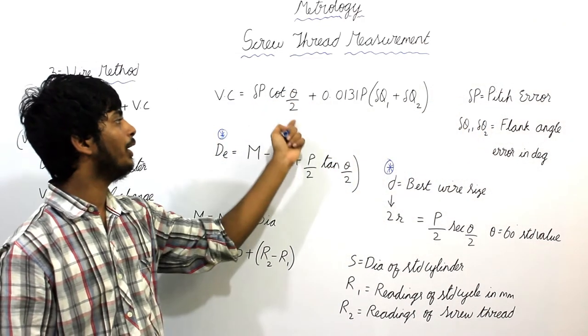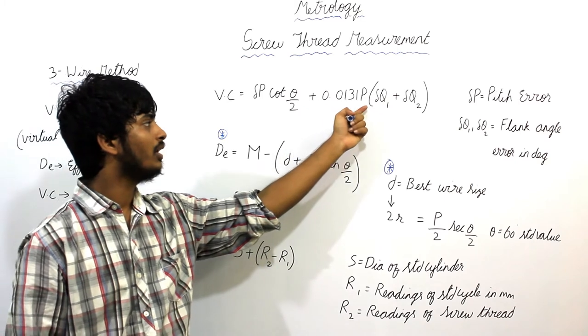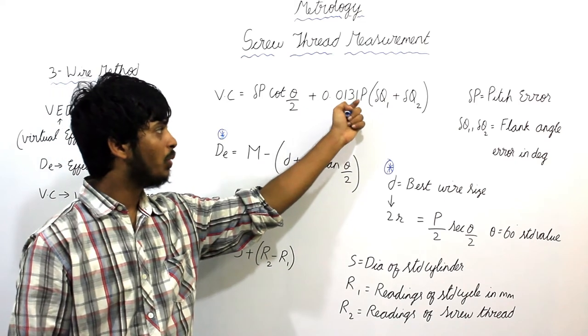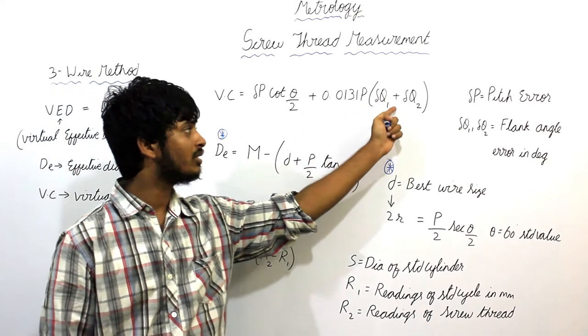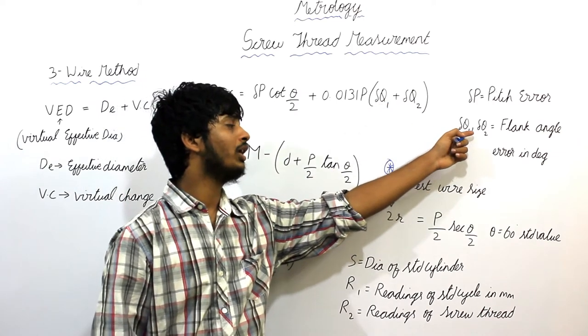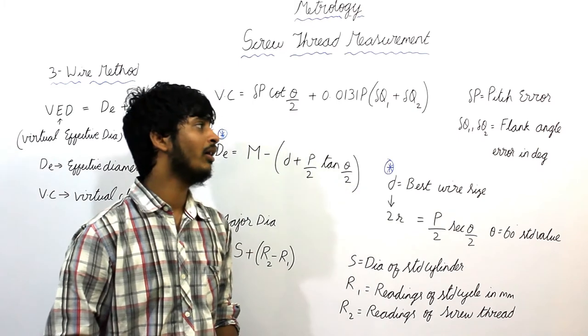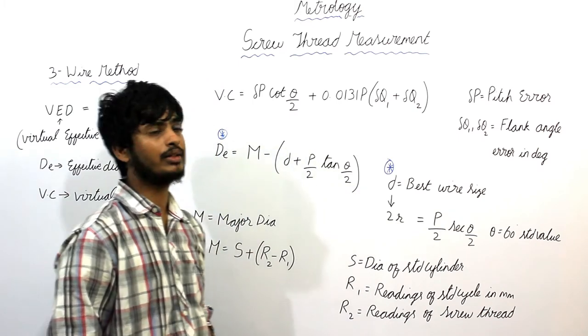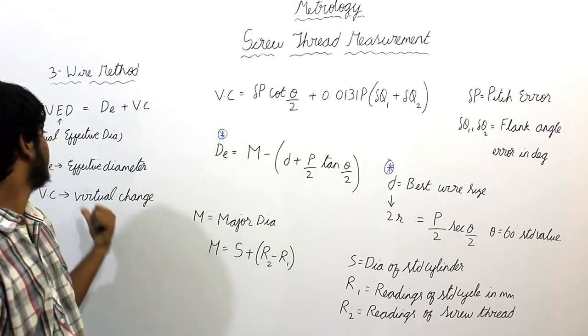Del P into cot theta delta 2 plus 0.313 P, 0.131 P del Q plus del Q1 plus del Q2, where del Q1 and del Q2 are flank angle error in degrees. This is virtual change. This is virtual change.